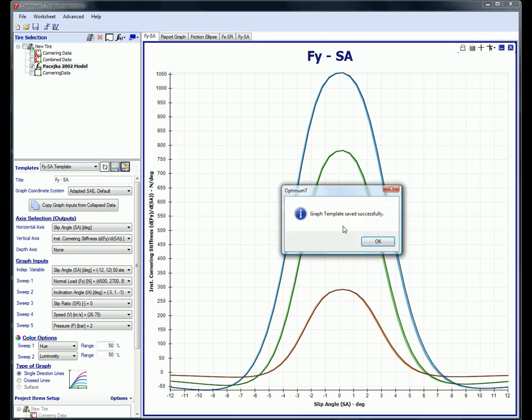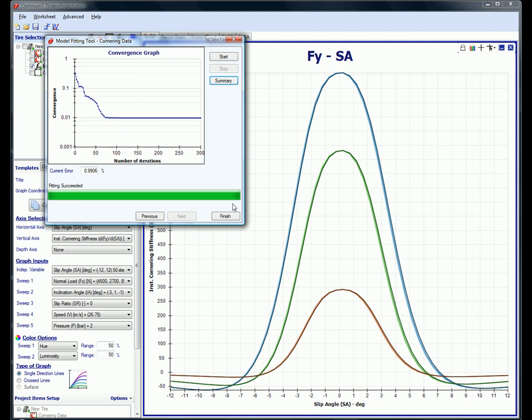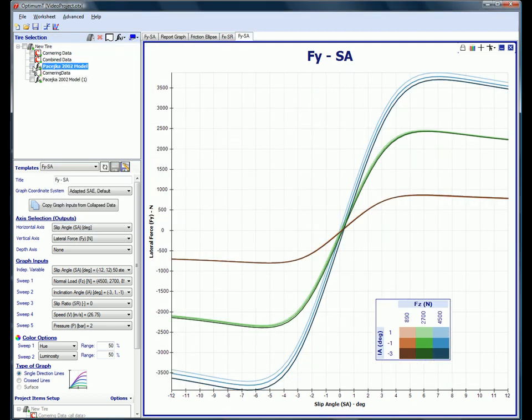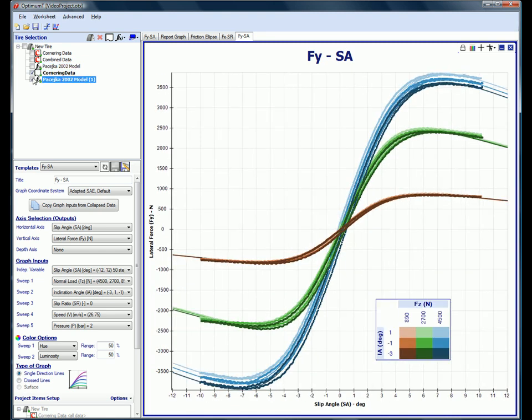Now we'll switch back to the model fitting window. The model has finished with an error between the model and data of 1%. We can click finish to bring the results into Optimum T. Now that we're back in Optimum T, we'll unselect the items that are currently being displayed and show the data that we imported a few seconds ago, overlaid with the model that we just fit to verify the quality of the fit. We can see that we got a reasonably good fit.